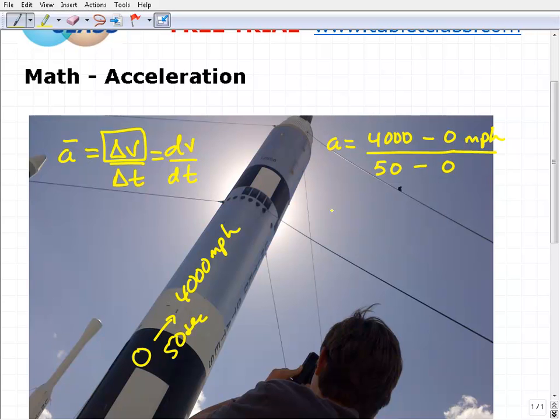Once we have this formula built, we can actually determine the acceleration. So it's going to be four thousand—four thousand minus zero is four thousand miles per hour over 50 minus zero, which is 50 seconds.